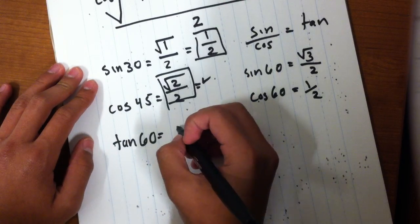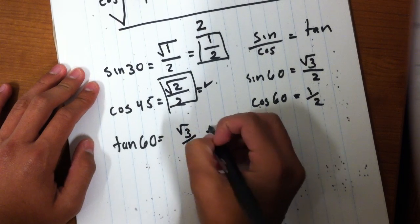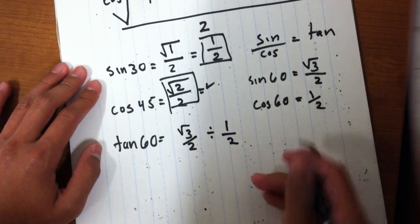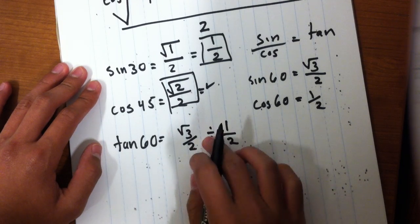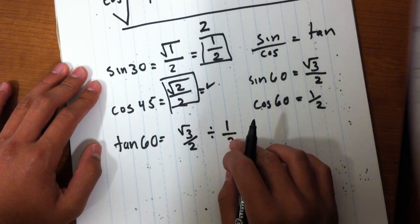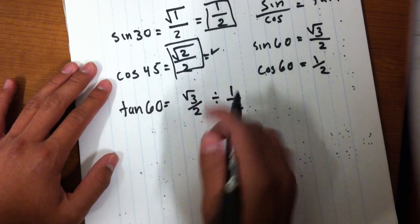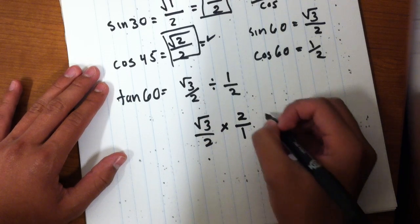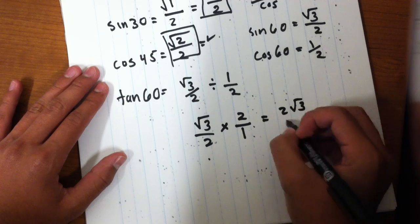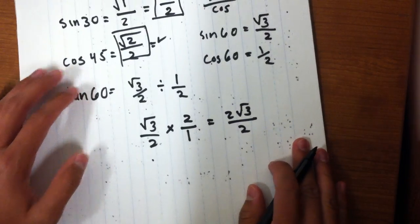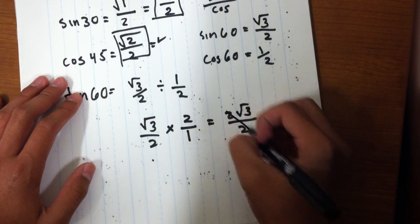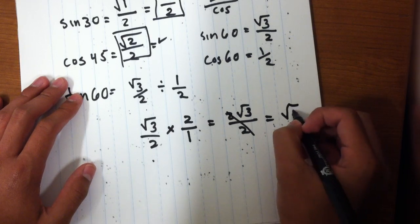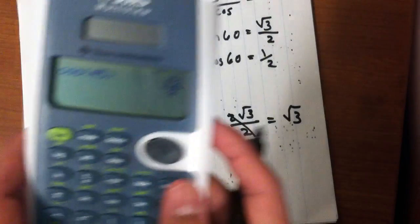Basically, this would be square root of 3 over 2 divided by 1 half. Since we know how to divide fractions, we know that if we do the reciprocal of this, we can multiply the first value. So it would be square root of 3 over 2 times 2 over 1. This would give us 2 square root of 3 over 2. Then the 2 just cancels with each other and we're left with square root of 3. And we could verify this on the calculator: tangent of 60 equals square root of 3.